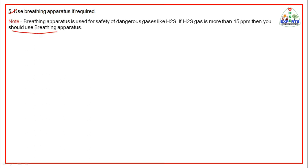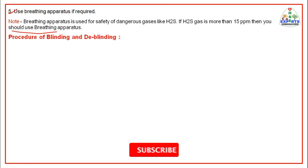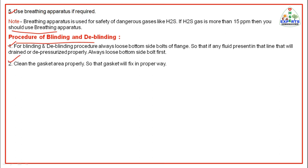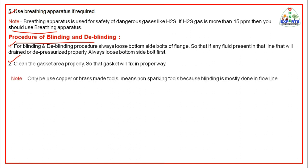Check your tools properly — always use a brass hammer. Use breathing apparatus if required. Note that breathing apparatus is used for safety against dangerous gases like H2S. If H2S gas is more than 15 ppm then you should use breathing apparatus. For blinding and de-blinding procedure, always loosen the bottom side bolts of the flange first, so that any fluid present in the line will drain and de-pressurize properly. Clean the gasket area properly so that the gasket will fix in the proper way. Note that only non-sparking tools such as copper or brass tools are used because blinding is mostly done on flow lines.